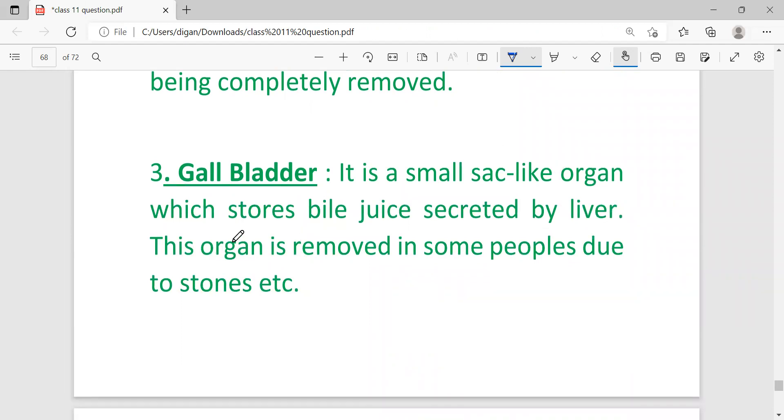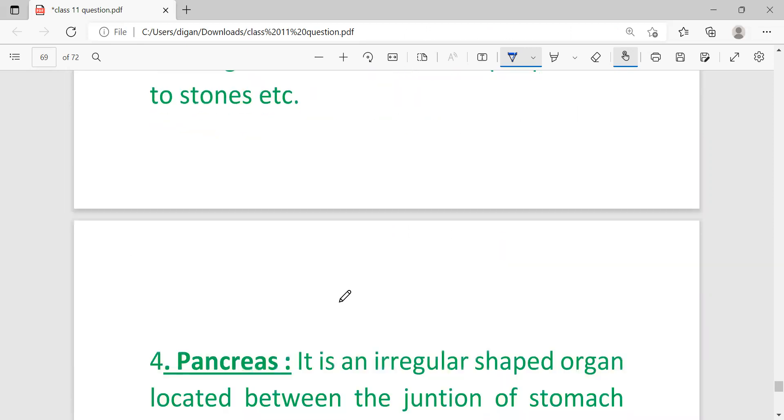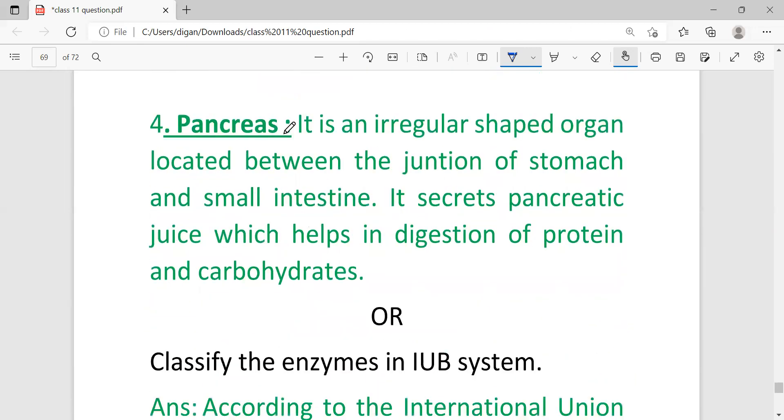Gallbladder: It is a small sac-like organ which stores bile juice secreted by liver. This organ is removed in some people due to stones. Pancreas: It is an irregular-shaped organ located between the junction of stomach and small intestine.